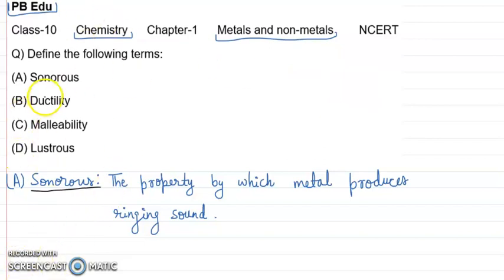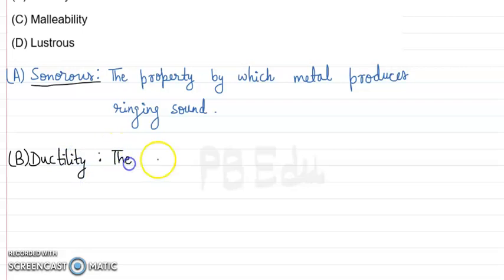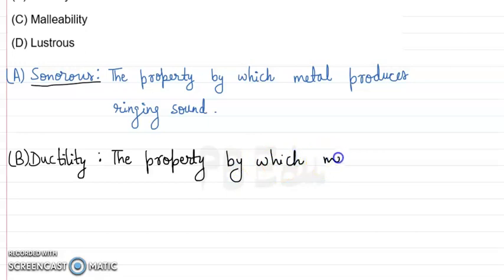The next property is ductility. Ductility is the property of metals by which metal can be drawn into wires.